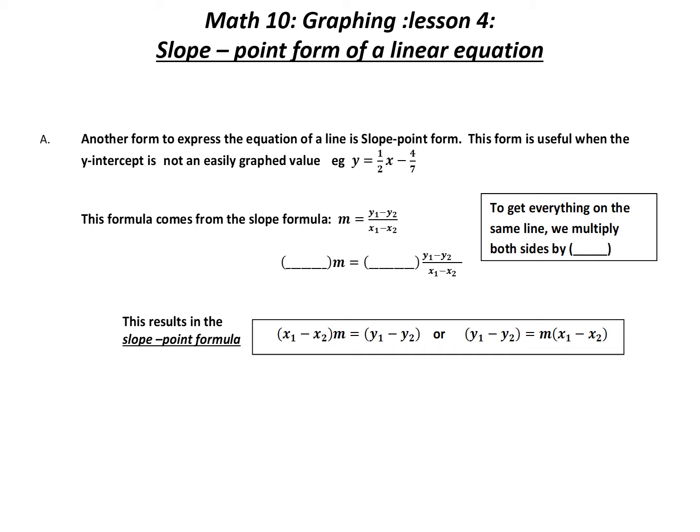So where does this formula come from? It starts with the slope formula, and the idea is that we have all values on one single line, which means there's no denominator. To eliminate the denominator, we multiply both sides by x1 minus x2. On the right-hand side, x1 minus x2 cancels out, leaving us with: x1 minus x2 multiplied by m equals y1 minus y2.